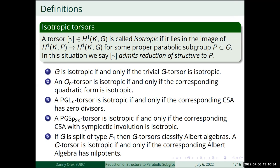The takeaway is that this notion is a generalization of notions of isotropy for semi-simple groups, quadratic forms, and involutions on simple algebras. It also matters in practice because whether a particular torsor admits reduction of structure to some parabolic has concrete meanings on the side of algebraic structures classified by those torsors.